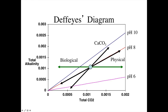If we add calcium carbonate, we add 2 units of alkalinity per unit of total CO2, so the slope of this line is 2. We move from the pH 8 line up toward the pH 10 line — the addition of calcium carbonate increases the pH of the system. If you know how much calcium carbonate you added, you can calculate exactly what the new pH would be.